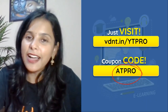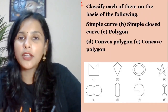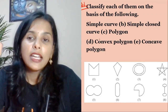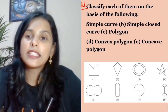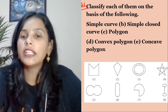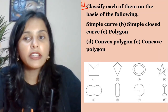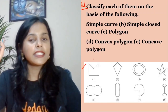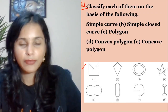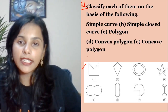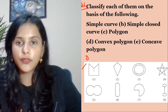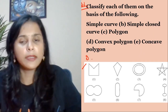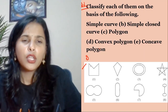Chalo, question number one on your screen: classify each one of the following on the basis of simple curve, simple closed curve, polygon, convex polygon, and concave polygon. So the first thing I'm checking is whether it is simple — so this is simple. I'll write S for simple. This is also simple closed, so I'll write S for simple closed as well.